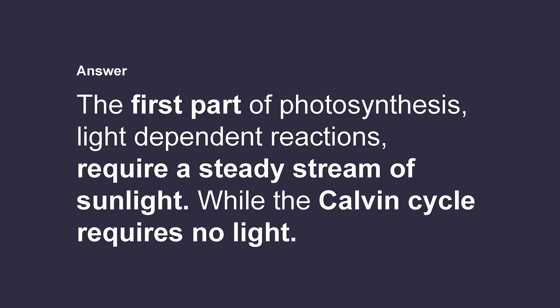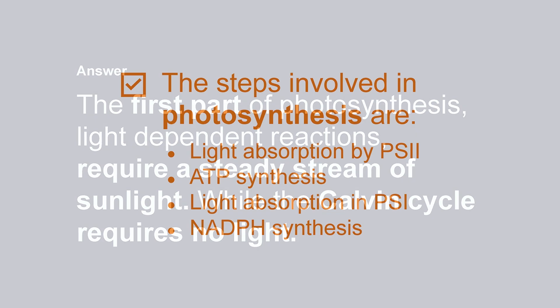Great job! The first part of photosynthesis — light-dependent reactions — requires a steady stream of sunlight, while the Calvin cycle requires no light at all.